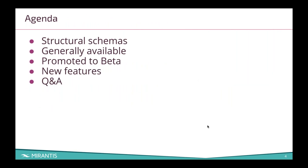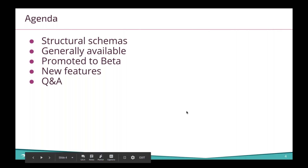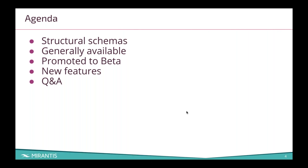So real quick, just talking about what we are going to talk about. We're going to start with a discussion of structural schemas, which is kind of a new thing that affects a lot of the other new features in this release. Then we'll talk about features that are now generally available, then we'll work our way back through features promoted to beta, then the new stuff, and then we'll answer your questions.